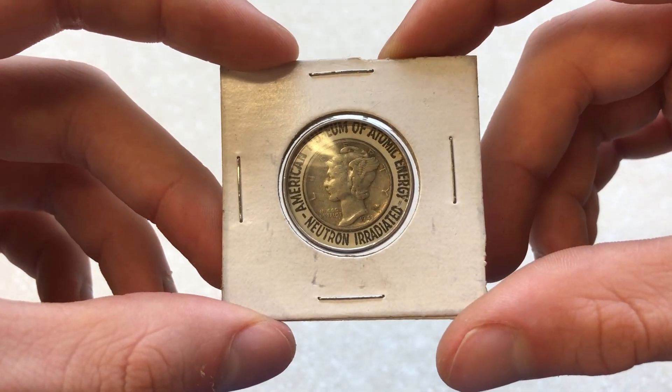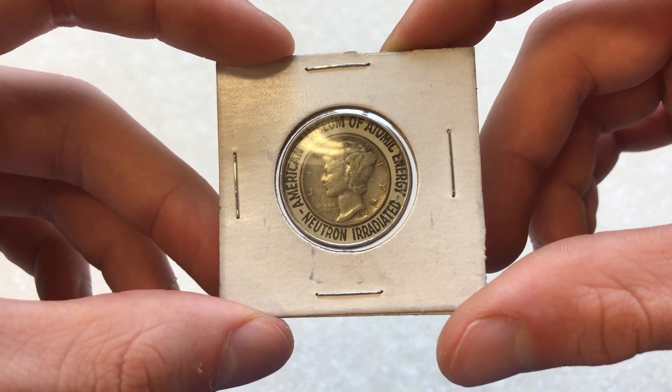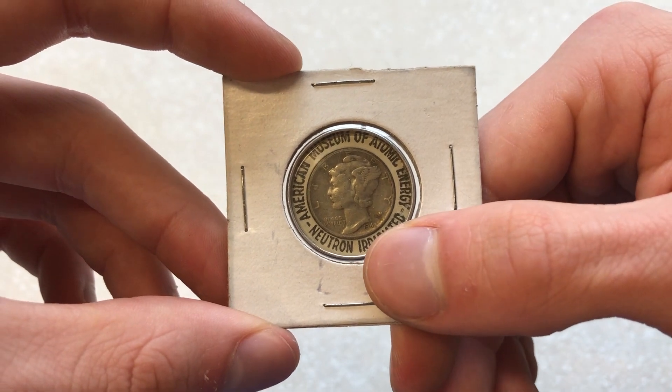Today's video, we will be taking a look at a neutron-irradiated mercury dime. This coin is from 1943.